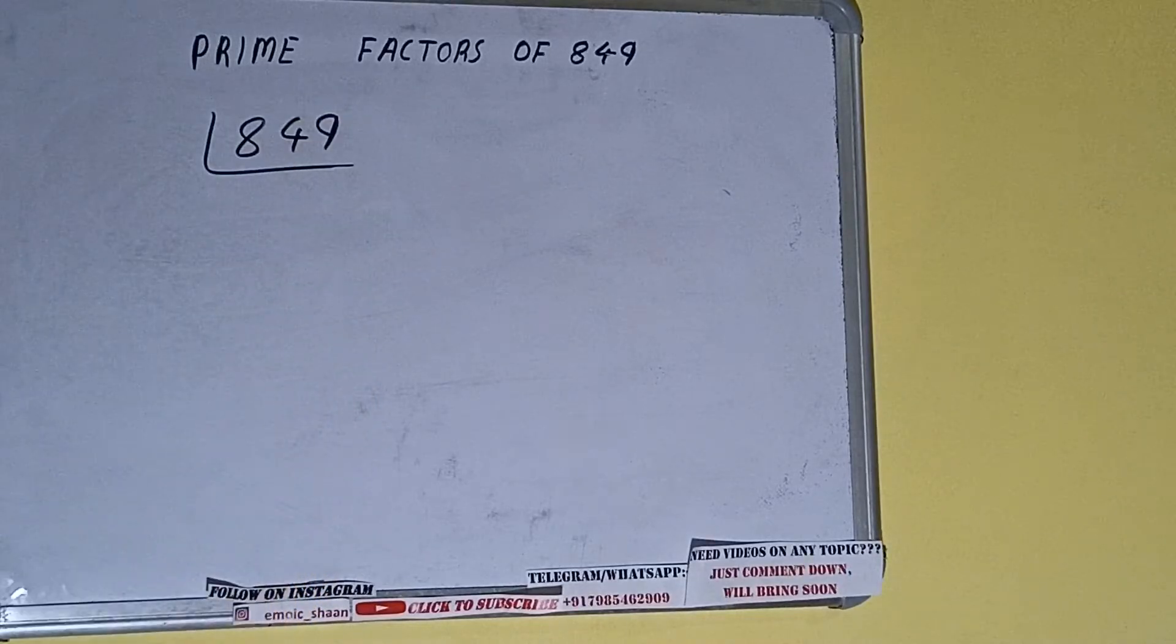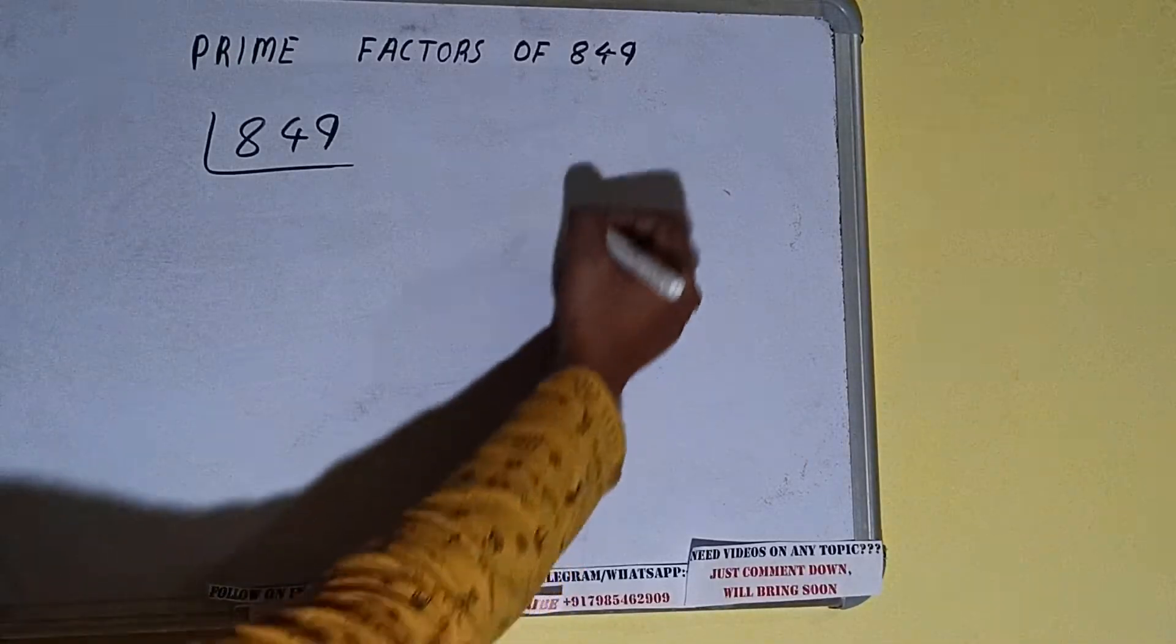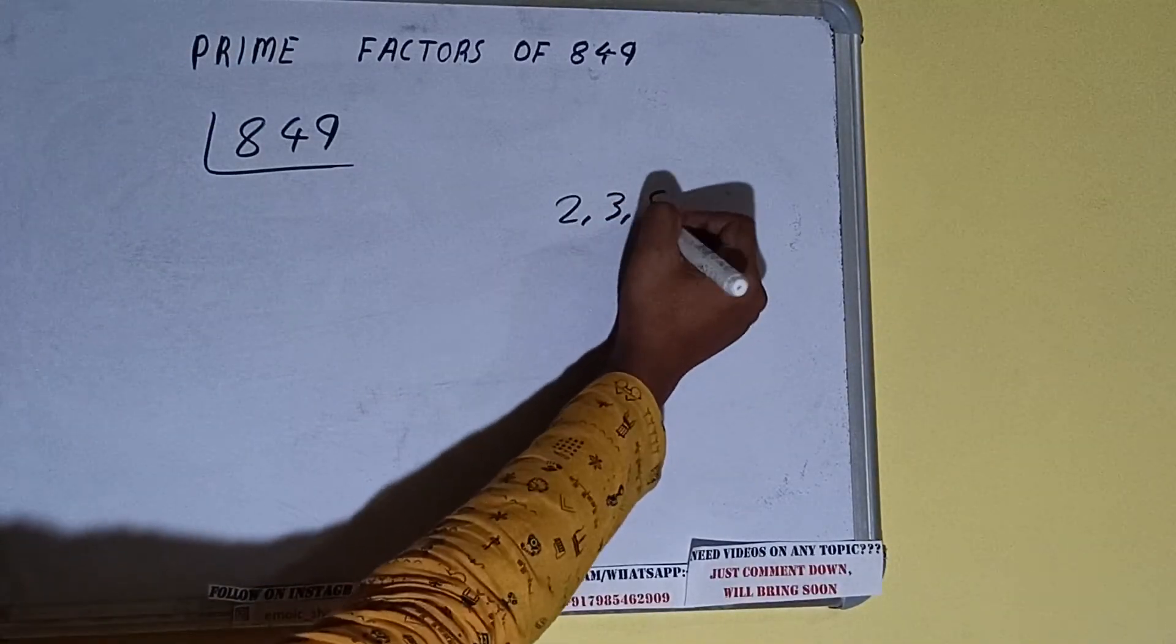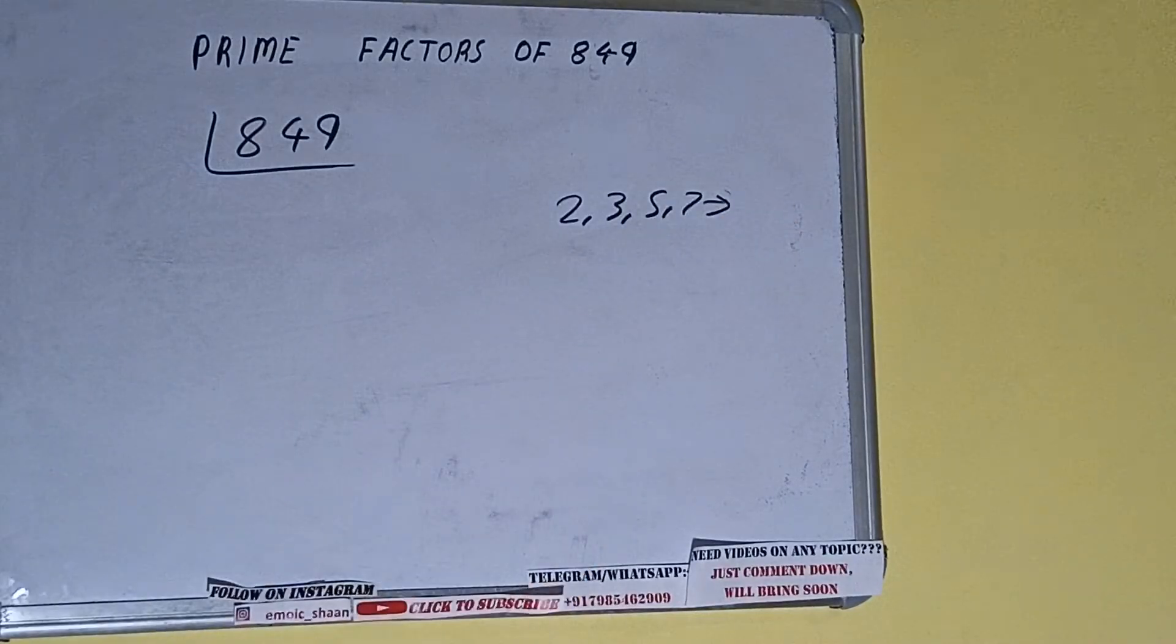The next thing we need to know about is what are prime numbers. Prime numbers are numbers that are divisible by 1 and the number itself, like 2, 3, 5, 7, and so on.